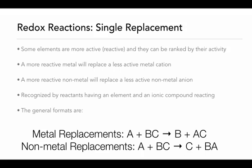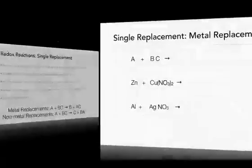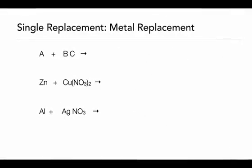Let's take a look at a couple of examples. We'll start off with our metal replacement. In review, we have element A, which is representing a metal. We have ionic compound BC.